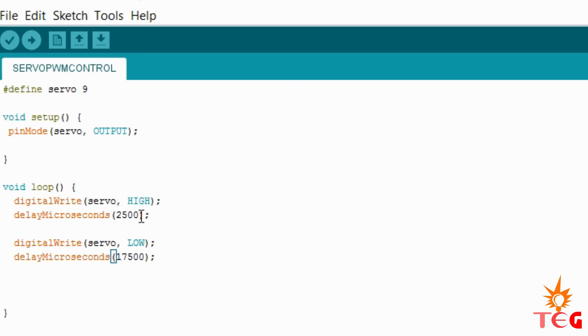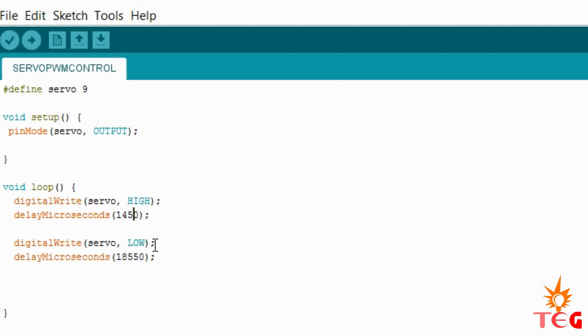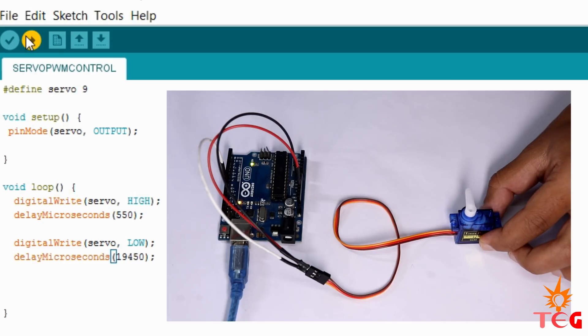Now to rotate servo motor to 90 degree position, high pulse should be of 1.5 milliseconds. So let's adjust the values according to our requirement: 1450 and 18550. Now let's upload the code. Similarly, to zero degree position, the high pulse should be of 500 microseconds or 0.5 milliseconds. Upload the code. And here the motor is in its zero degree position.